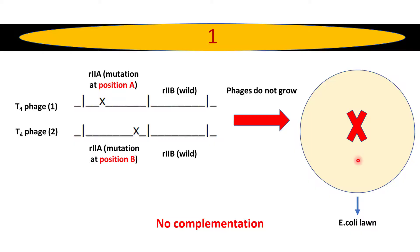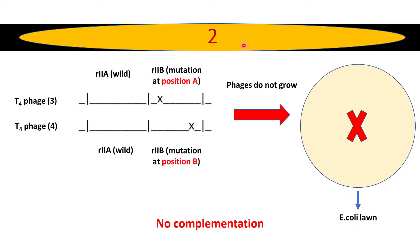In the second test, he took the same K12 strain of E. coli and infected it with two types of T4 phages — T4 phage type 3 and T4 phage type 4. This time both types of phages contain a mutation in the rIIb locus. The position of the mutation is different: one mutation occurs at position a and another at position b.